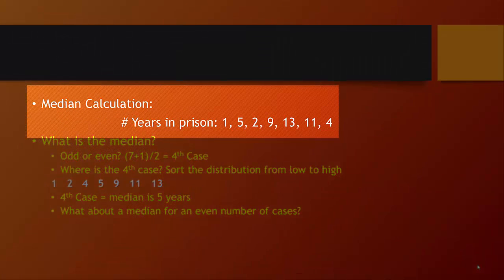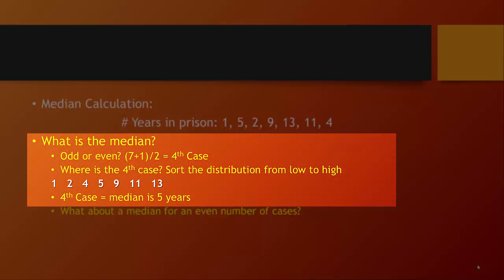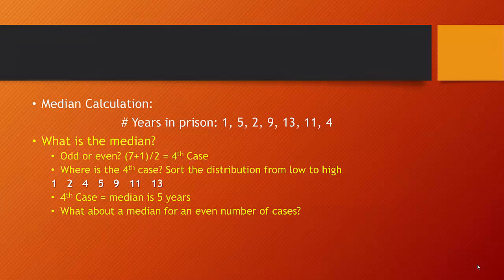Imagine we have data on years prisoners spent in prison: 1, 5, 2, 9, 13, 11, and 4. We apply the formula: n + 1 = 7 + 1 = 8, divided by 2 = 4. So the median occupies the fourth position once sorted in ascending order: 1, 2, 4, 5, 9, 11, 13. The fourth observation is 5. The value 5 has three observations below it and three above it — confirming it is the median.